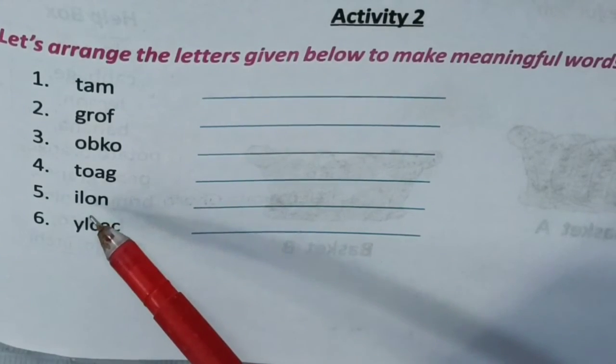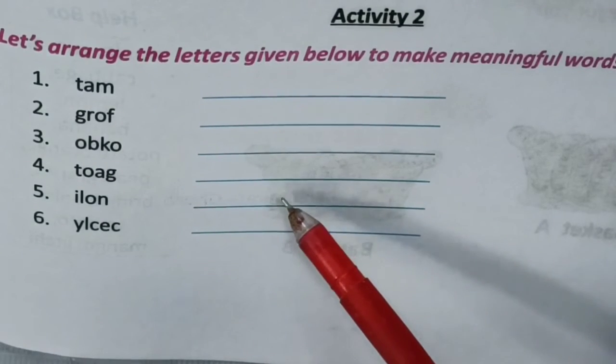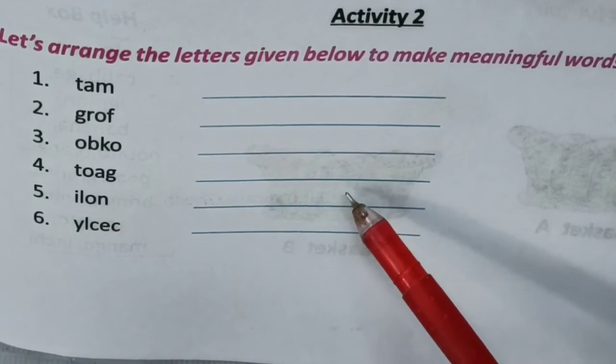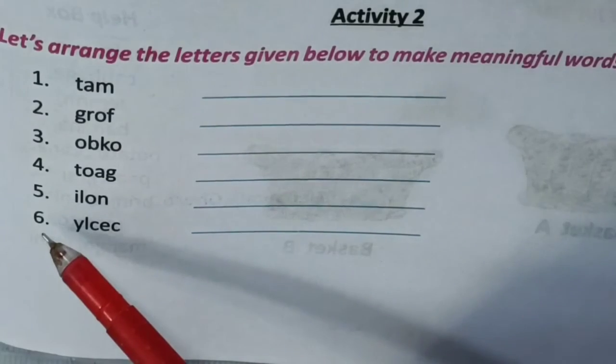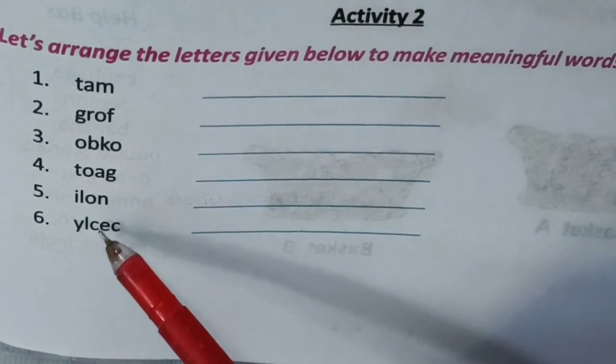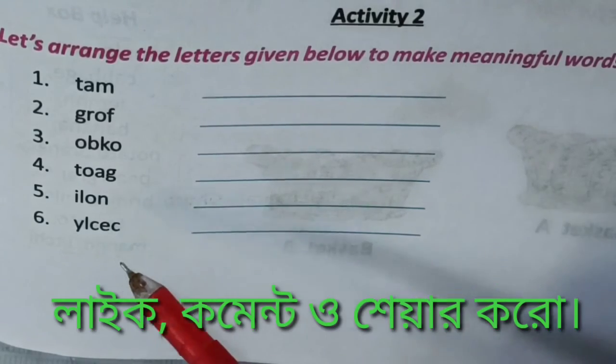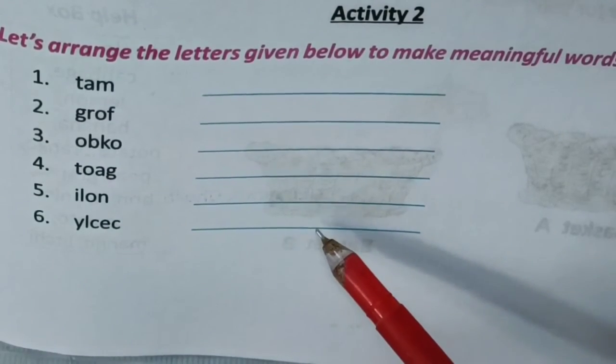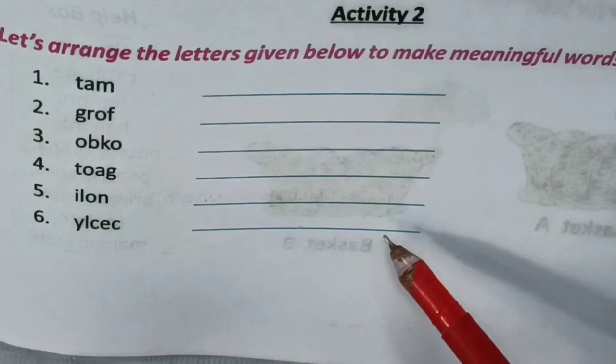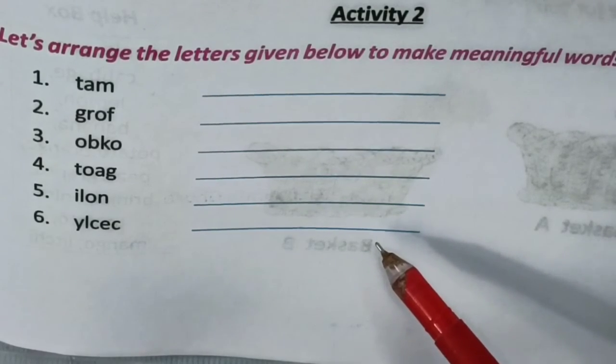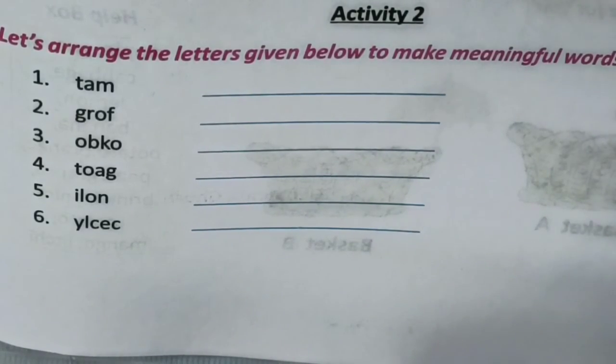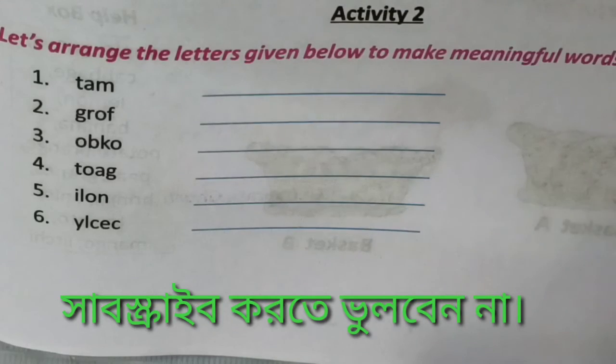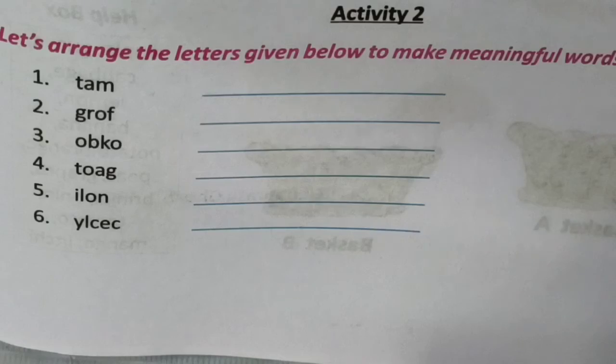Number 5 આઈ એલ ઓ એન if we arrange તાલે આમરા પાબો L I O N શીંહ. Number 6 Y L C C એ તાલે આમરે પાબો C Y C L E સાઈકેલ, cycle means બાઈક